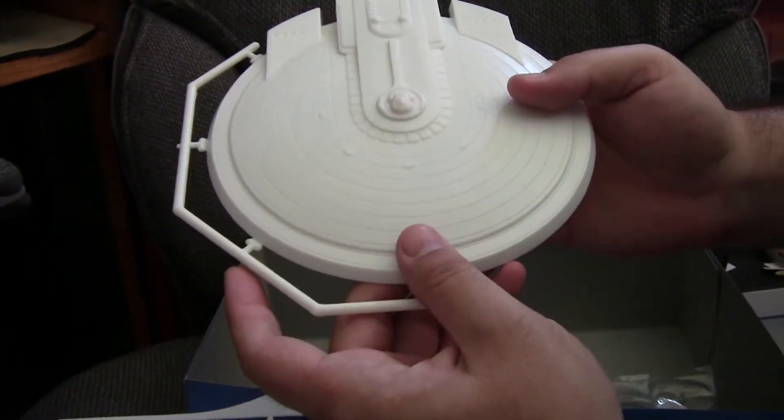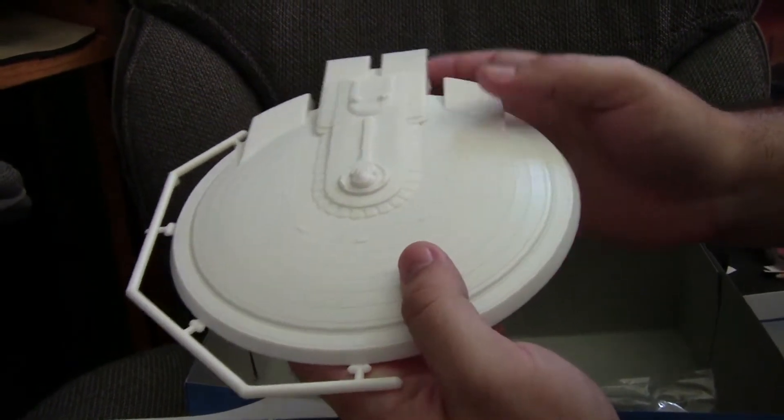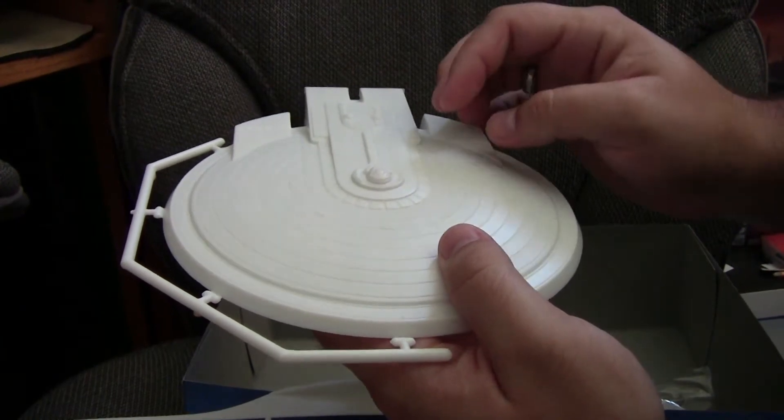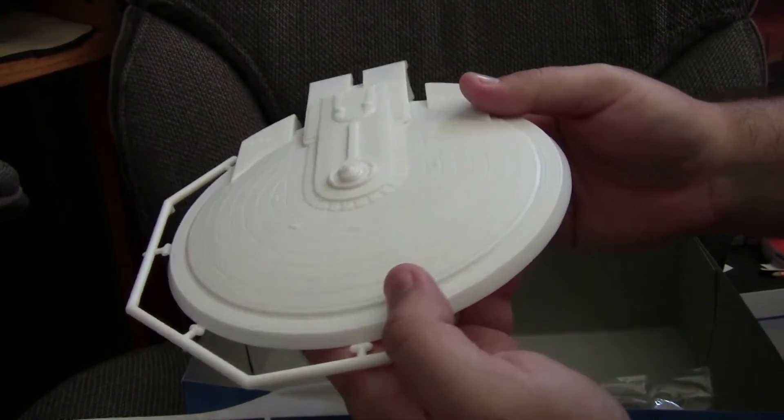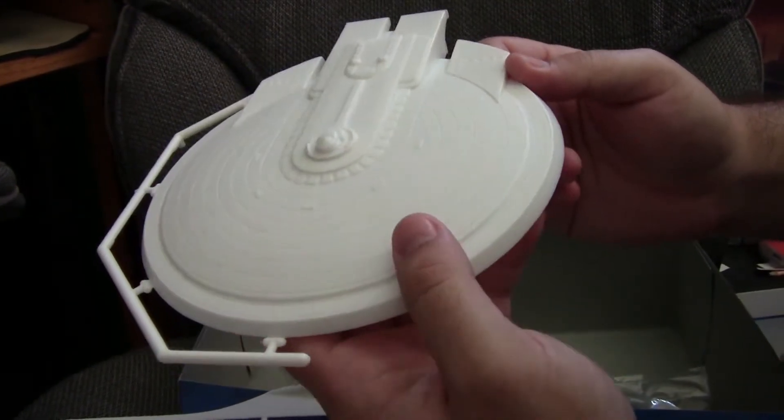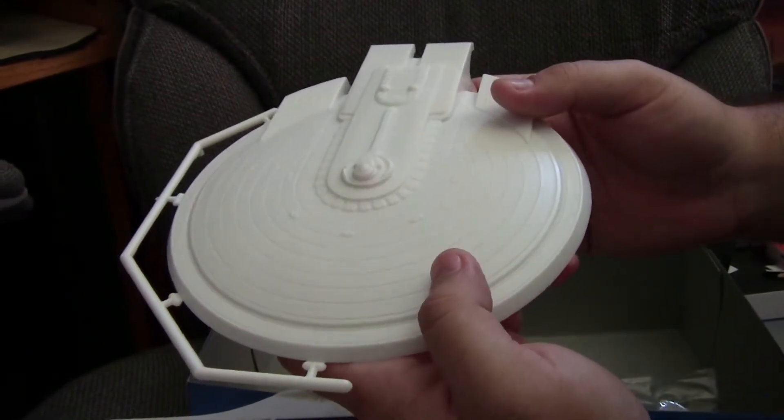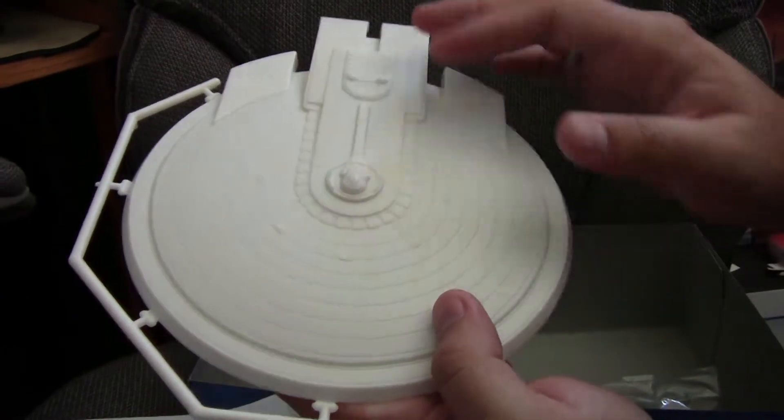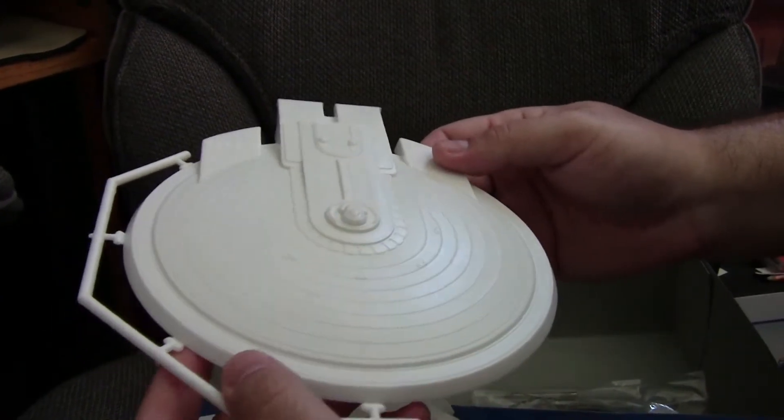Now, one issue that does still reside with this kit is the bridge. It's basically too small for this scale. As this kit is 1:1000 scale, which I forgot to mention at the start. As you can even see, it does look, just looking at it, it does seem a little off scale.